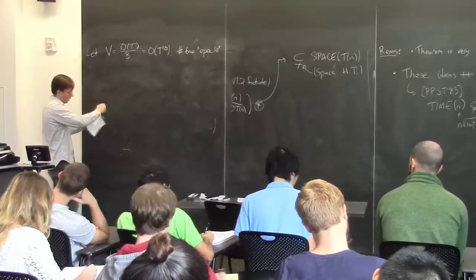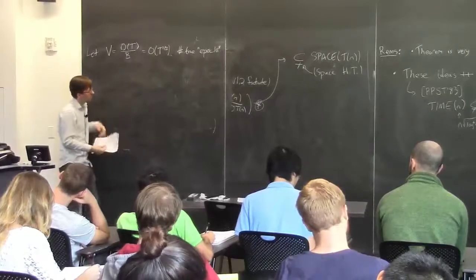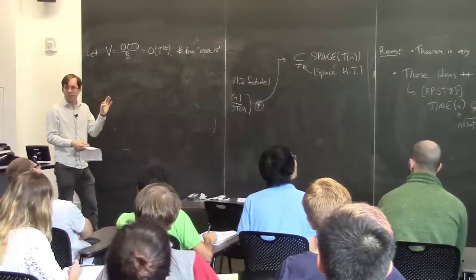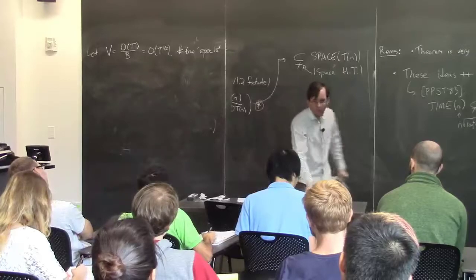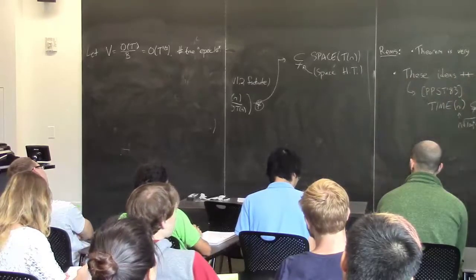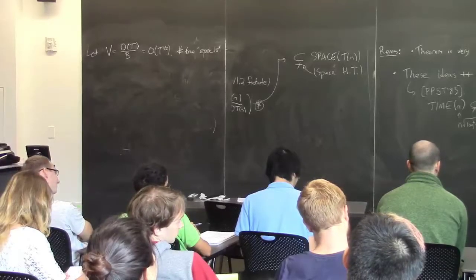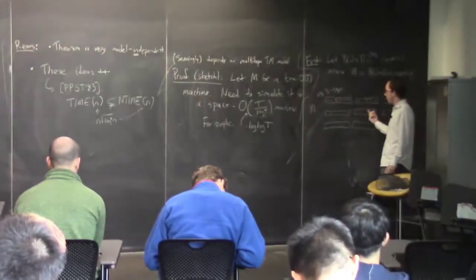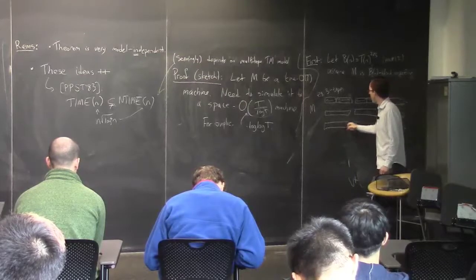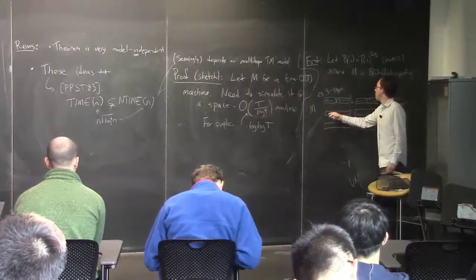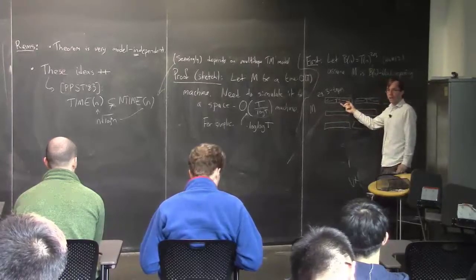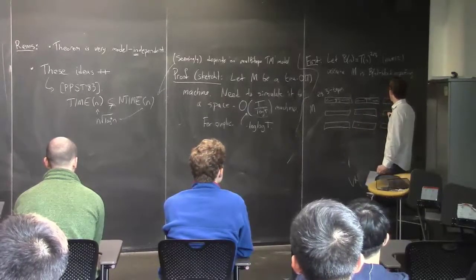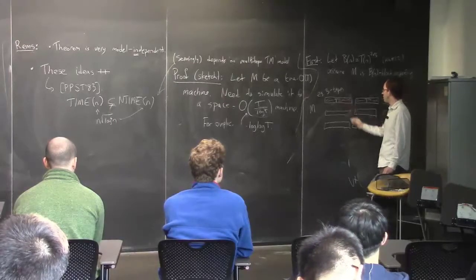I'm going to divide time into V many epochs, and within one epoch the tape heads always stay inside blocks. In the first epoch, between time 1 and time B, all three tape heads will be somewhere in one set of blocks. Then at epoch 2, the tape heads may move to different blocks — maybe this tape head goes into this block, and this tape head goes into this block, and this tape head stays in its block. And so on for epoch 3.